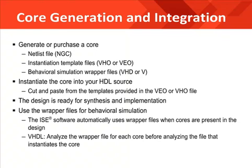The ISE software will automatically use the wrapper files generated by CoreGen when the cores are present in your design. Note that if the NGC file or EDIF netlist is not in the project directory, which it is by default when you use XST to synthesize your design, you'll need to add the directory where the netlist is stored to the cores search directory's property of XST, or add the NGC EDIF file to your synthesis tool project directory. After you've added the core to your design, synthesized, and are ready to place and route the design, the implementation tools will read in that NGC or EDIF file created by the core generator software. If the core is not in the project directory, be sure to add the directory to the macro search path property of translate. This allows you to store your IP netlists in a separate directory outside of your project directory.